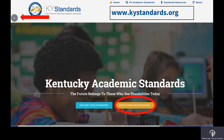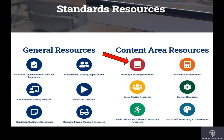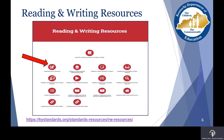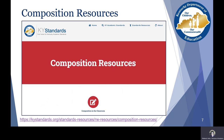When you get to kystandards.org to find our Conferencing Guides and Composition Rubrics, click on Standards Resources. Once you click on Standards Resources, you'll come to a page with a list of all the different content area resources. For reading and writing, look for the red icons and click the button that says Reading and Writing Resources. Once you click there, it brings you to a page where in the top left-hand corner are our composition resources. Click on that red icon and it will take you straight to our Conferencing Guides and composition rubrics.